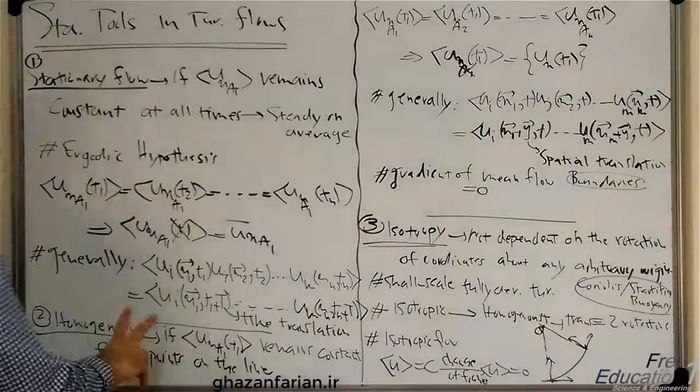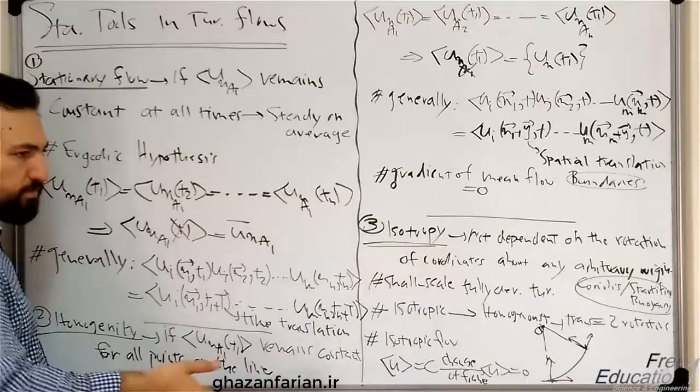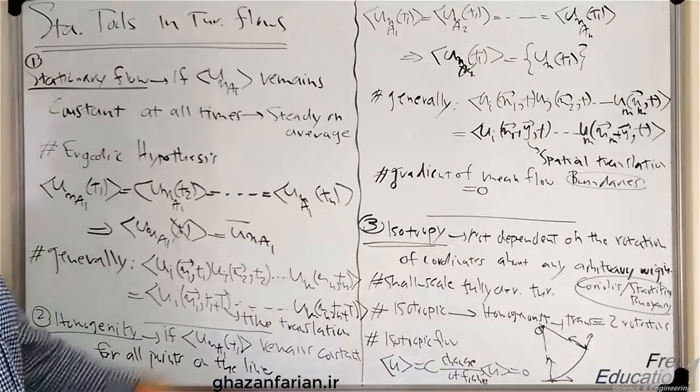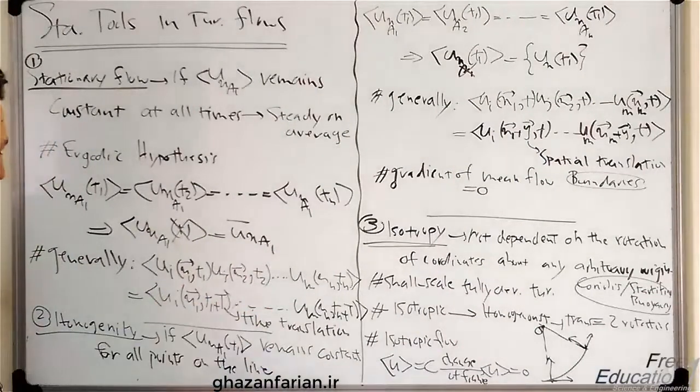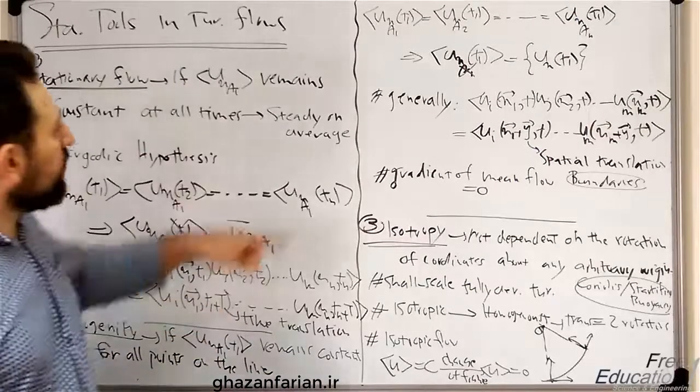If the ensemble average is not a function of the point at which you are performing the ensemble average along the line, for example, the flow is homogeneous.